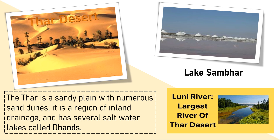The Thar Desert is a sandy plain with numerous sand dunes. It is a region of inland drainage — that is, though it has very few rivers, one of them being the Luni River, it is not able to reach the sea. It drains into one of the salt spans found in the Thar Desert. These salt spans or saltwater lakes are known as Dhands. The Sambhar Lake and Didwana Lake are examples of these saltwater lakes.